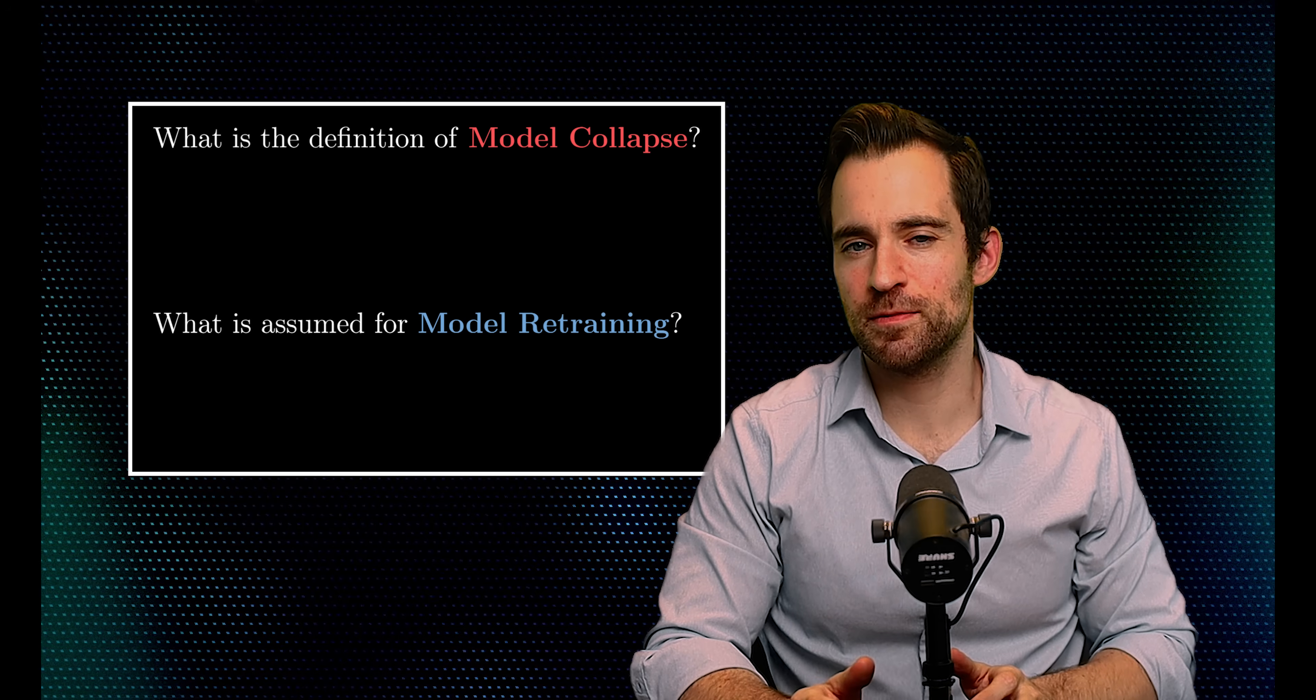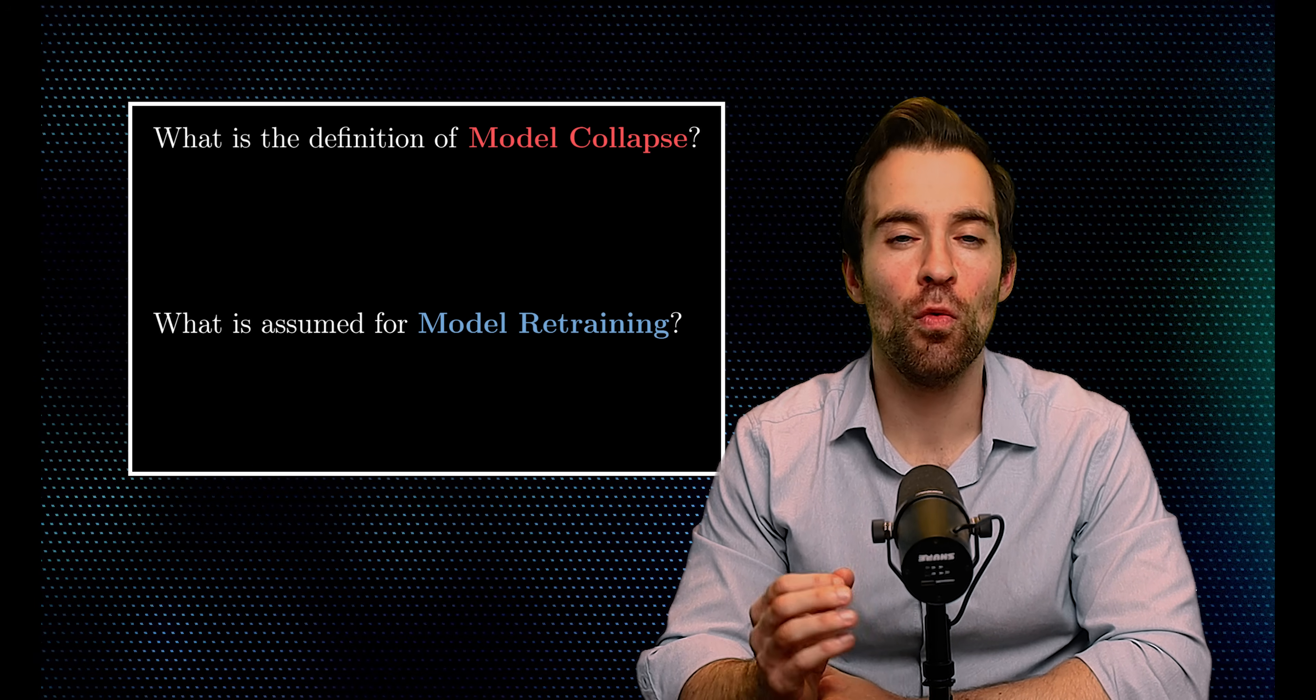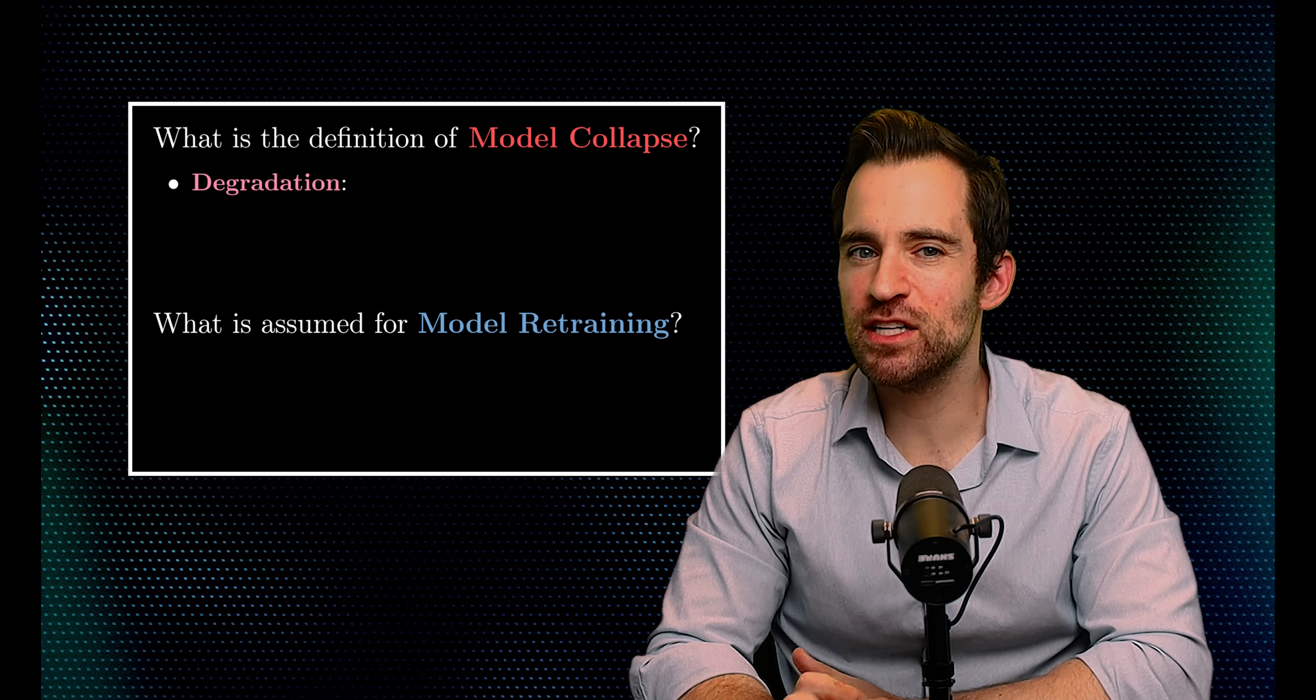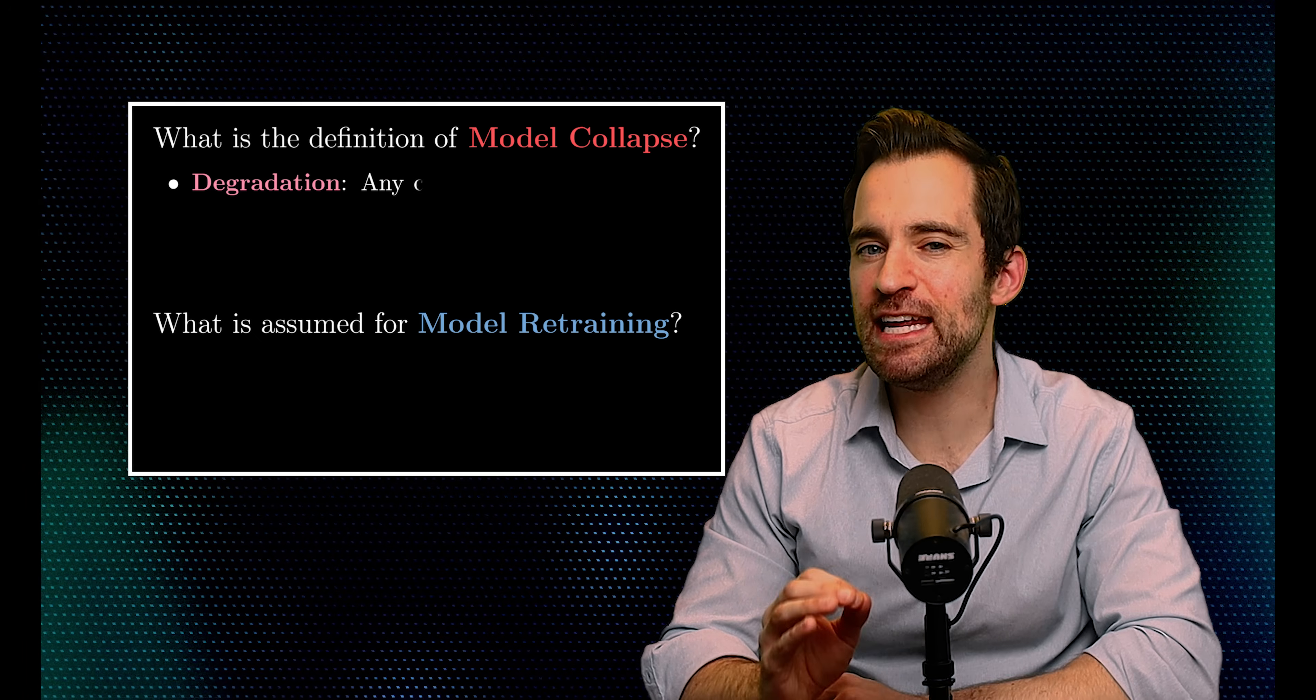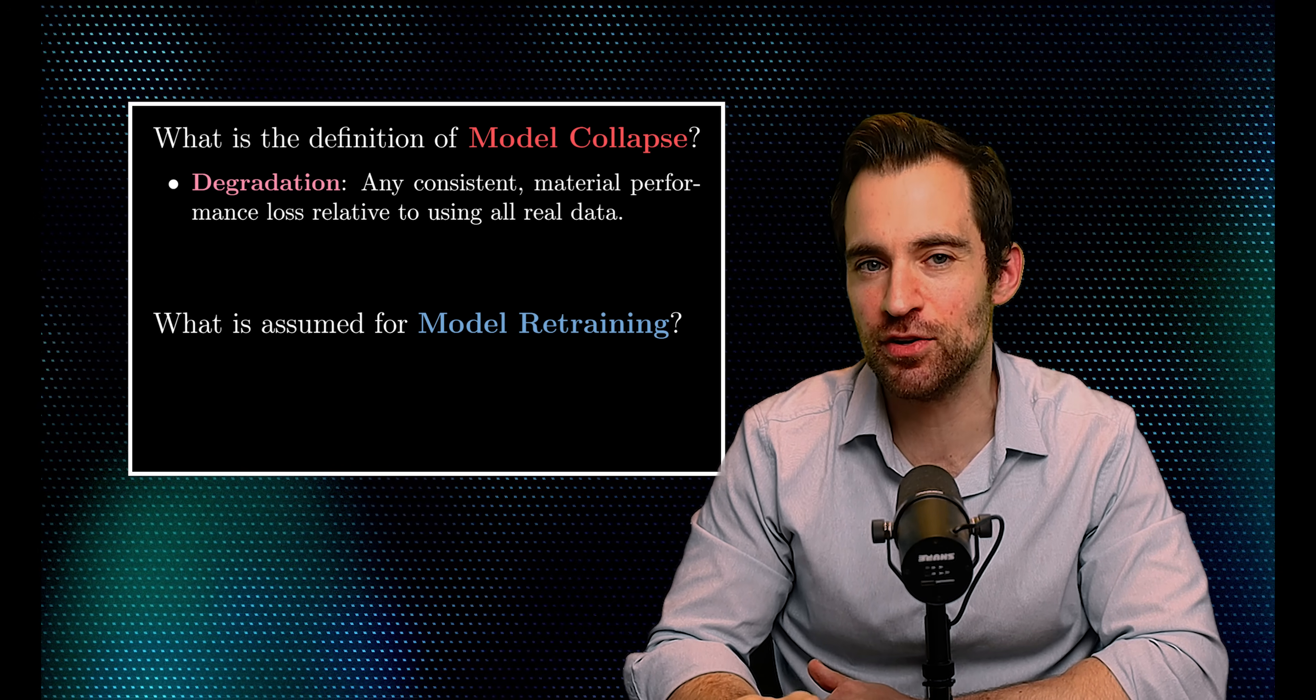So, let's go over the choices. First, for model collapse, there are two definitions. One says model collapse is any degradation in performance. That is, we have model collapse if there is any consistent material performance loss relative to the benchmark of using all real data in your training.